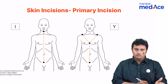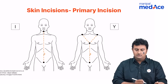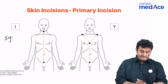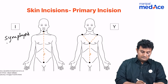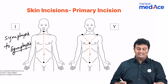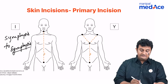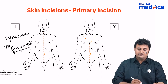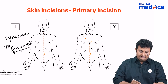Where does it extend to and where does it start from? It is said to be a symphysis to symphysis incision. What that basically means is you are going from the symphysis menti to the symphysis pubis, right down the middle.